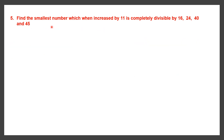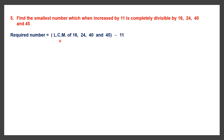Question 5. Find the smallest number which when increased by 11 is completely divisible by 16, 24, 40 and 45. Again, smallest number means we must find the LCM. They are saying we have to increase that number by 11 only then it is completely divisible. So we find the LCM and take away 11 from it. Required number = LCM of these four numbers minus 11. So let's find the LCM of 16, 24, 40 and 45.